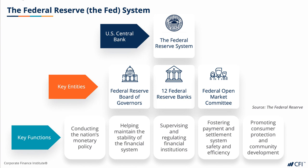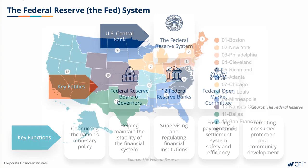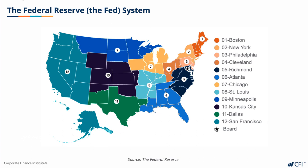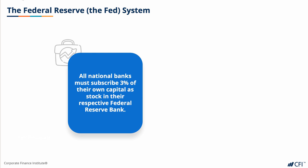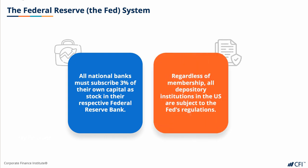As for the Federal Reserve itself, fewer people are aware of the structure of the bank. As shown here, the Federal Reserve system is made up of 12 regional Federal Reserve banks named after the locations of their headquarters, and they're the operating arms of the central bank. Under the original Federal Reserve Act, all US national banks must be a member of one of the 12 regional Federal Reserve banks and subscribe to 3% of their own capital as stock in the respective Federal Reserve Bank. State banks may join if they meet certain criteria, and regardless of whether a financial institution is a member or not, all of the roughly 20,000 depository institutions in the US are subject to the Fed's regulations, including reserve requirements.